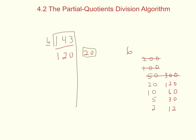After I've written those numbers down, the next step is to subtract. 3 minus 0 is 3, 4 minus 2 is 2, 1 minus 1 is 0 — so I have 23 left. 23 is what I still have remaining to divide up into 6 groups.